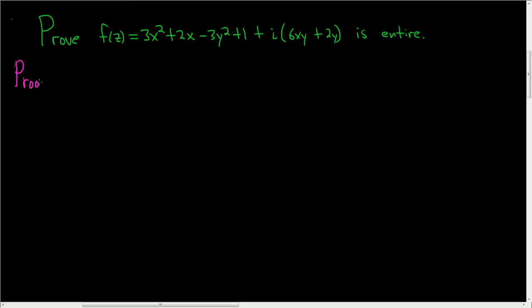So proof. To prove this, what we'll do is we'll show that the Cauchy-Riemann equations hold and the partial derivatives of the real and imaginary parts of f are all continuous everywhere. So this here, we're going to let this be u and we're going to let this be v.